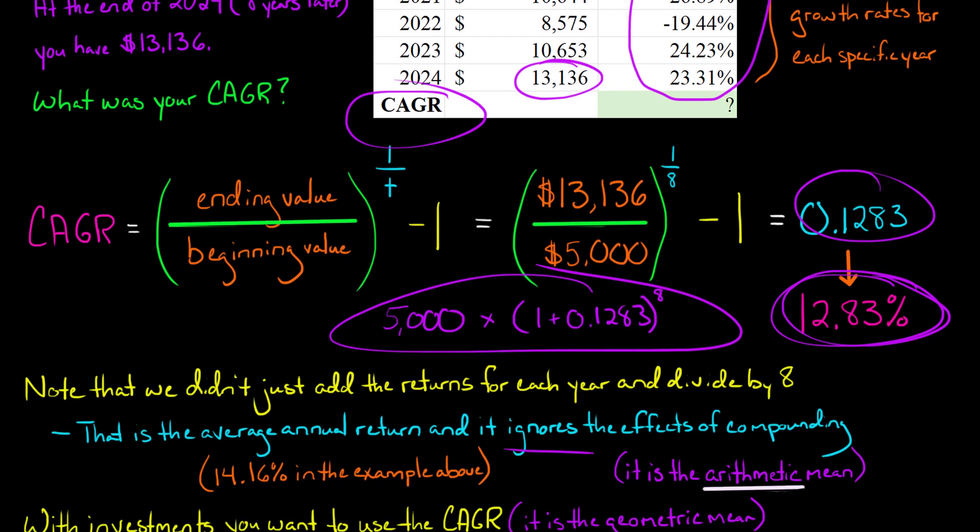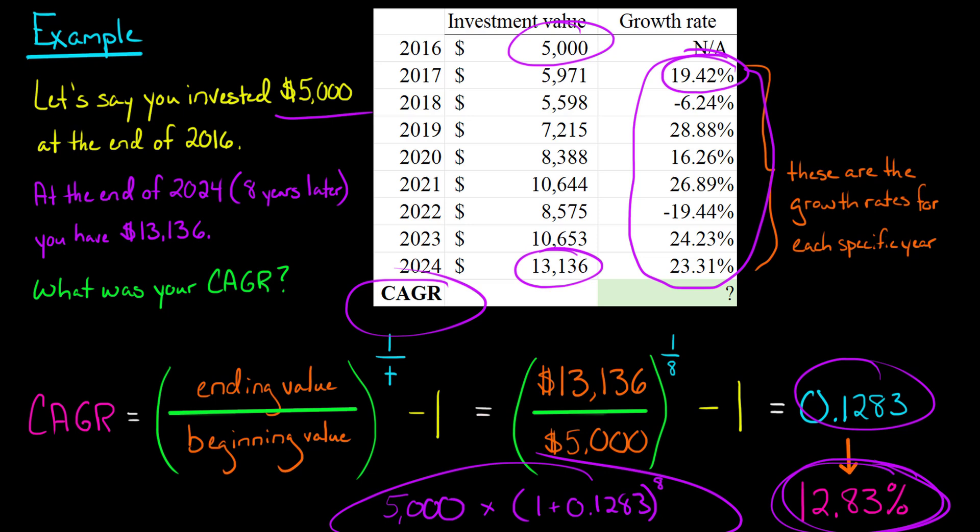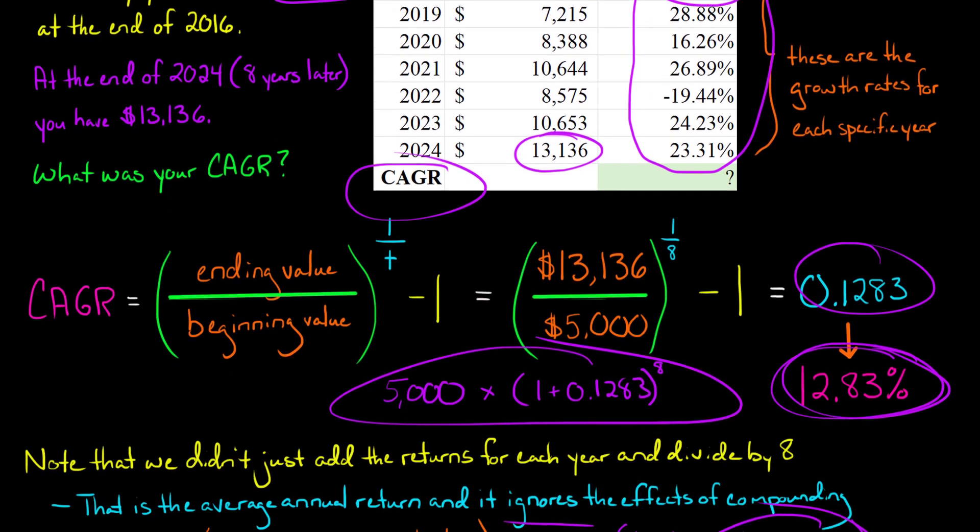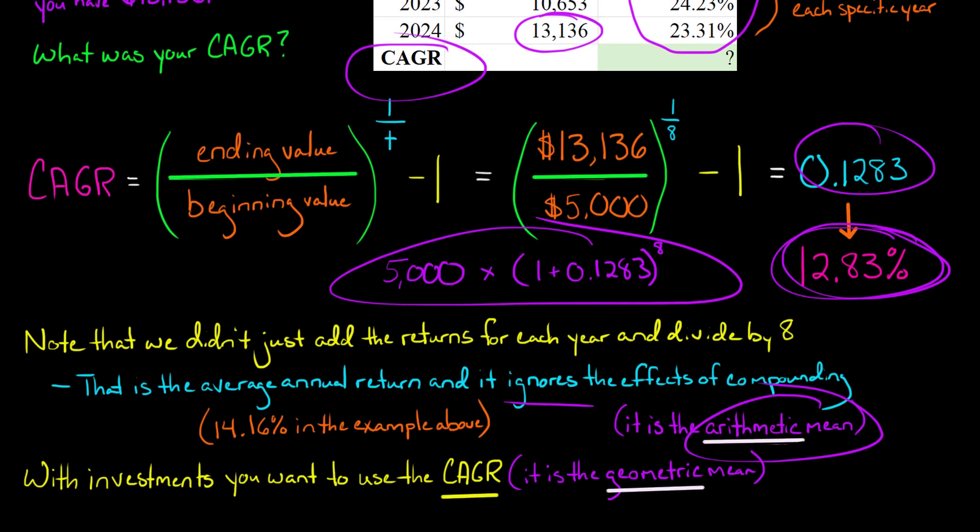But basically, if you did do that, if you took the average of all those, you would have had an average annual return of 14.16%. Now, that is actually called the arithmetic mean, where you just add up all the annual returns. So 19.42 plus negative 6.24 plus 28.88, et cetera. You add up all those and divide by eight because there were eight growth rates. So the arithmetic mean, they're never going to have where the compounded annual growth rate is higher than the arithmetic mean. It'll be less than or equal to it. Because the compounded annual growth rate is actually something called the geometric mean.